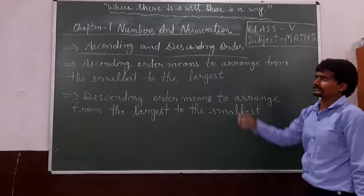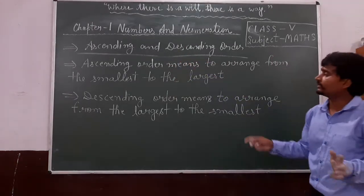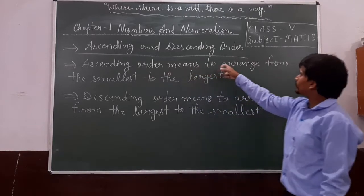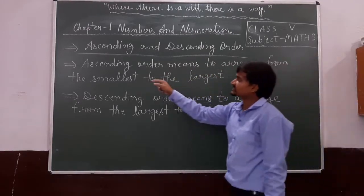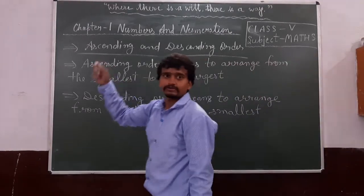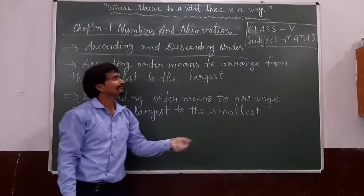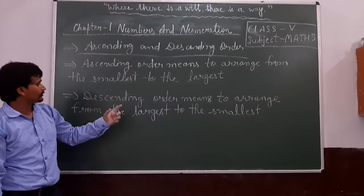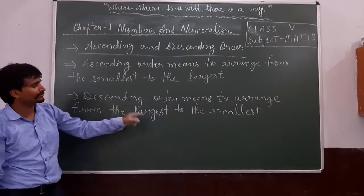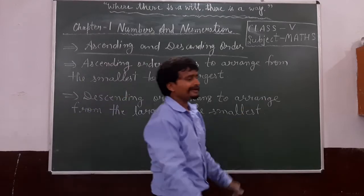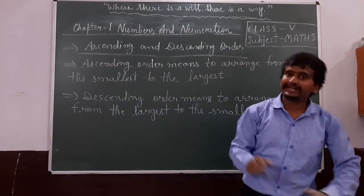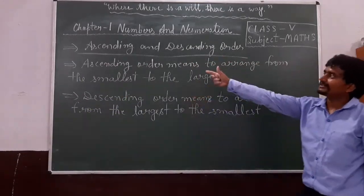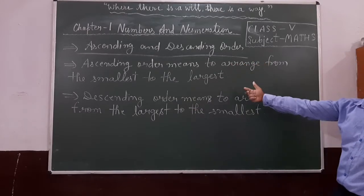Now, ascending and descending order. As we know, ascending order means to arrange from the smallest to the largest. And descending order means to arrange from the largest to the smallest. Let us do some examples to clear ascending and descending order.